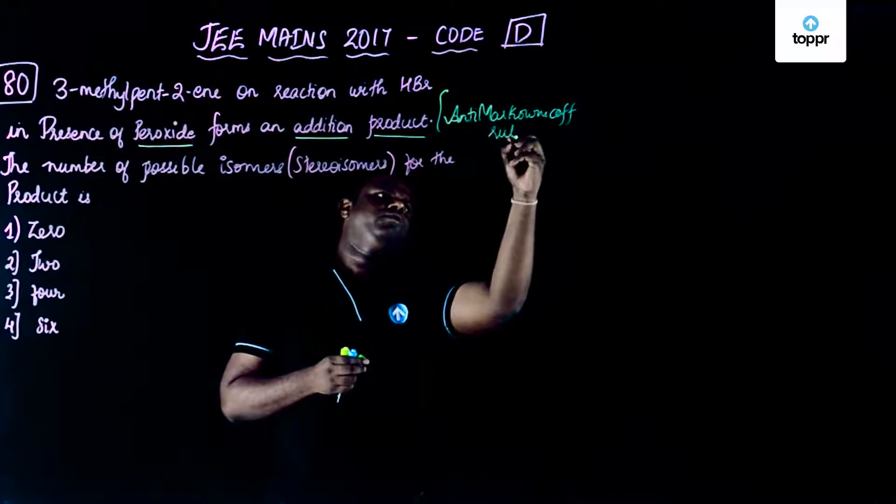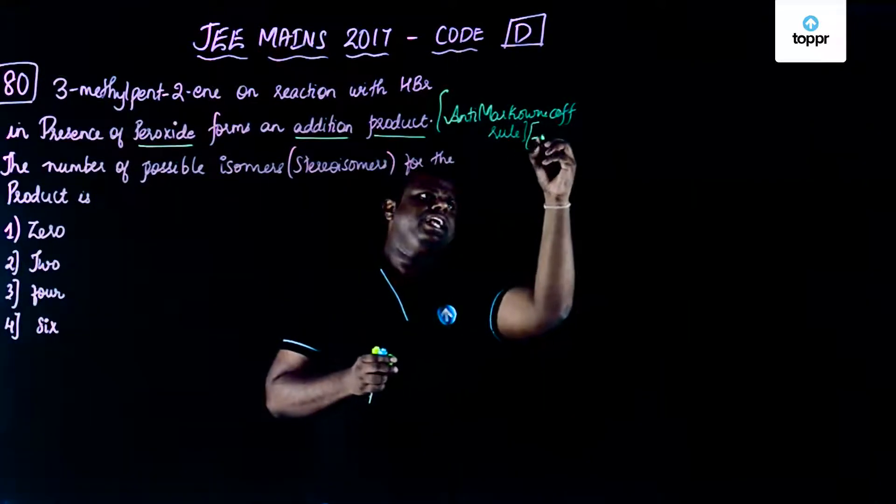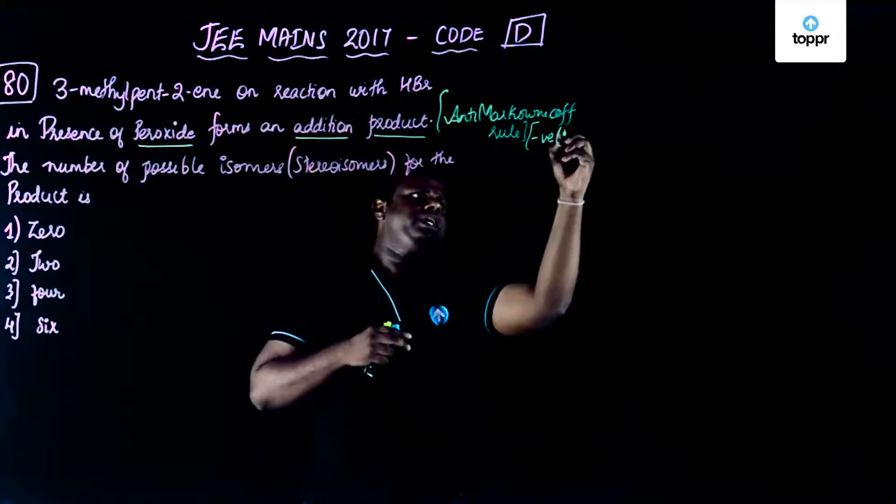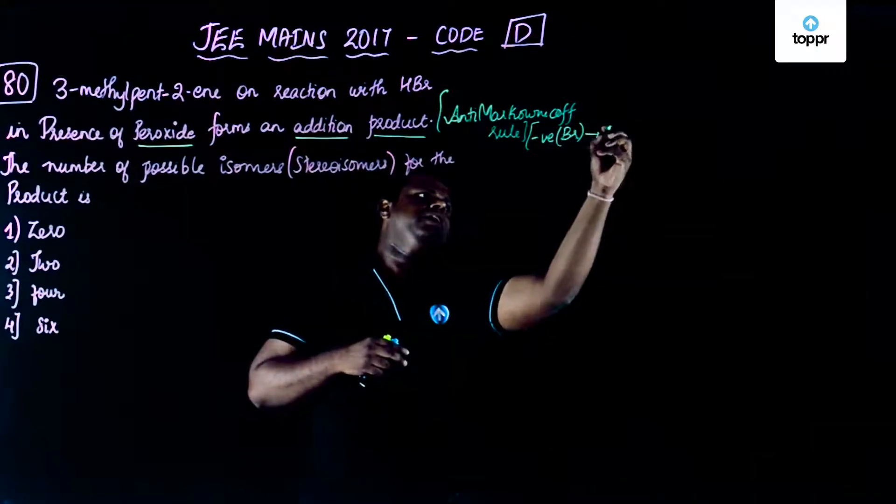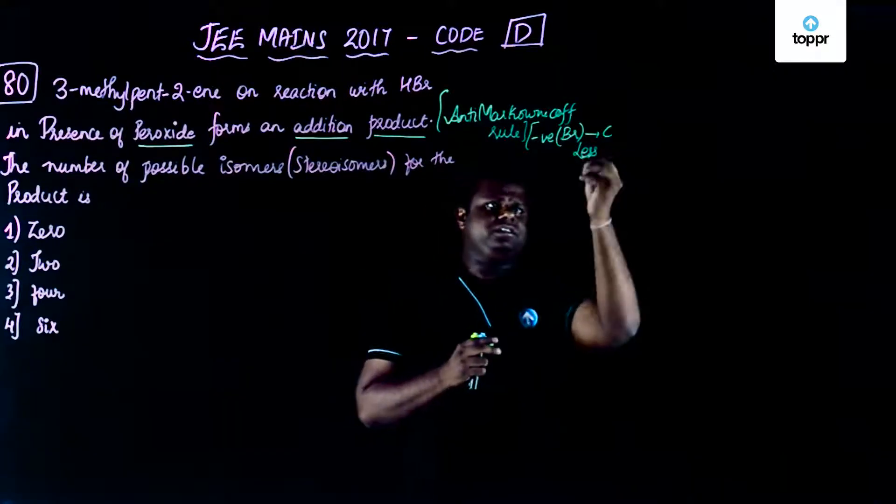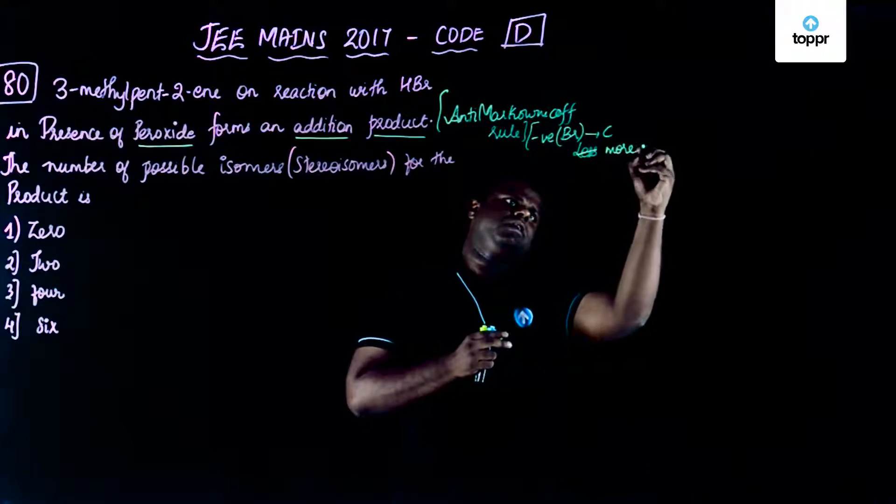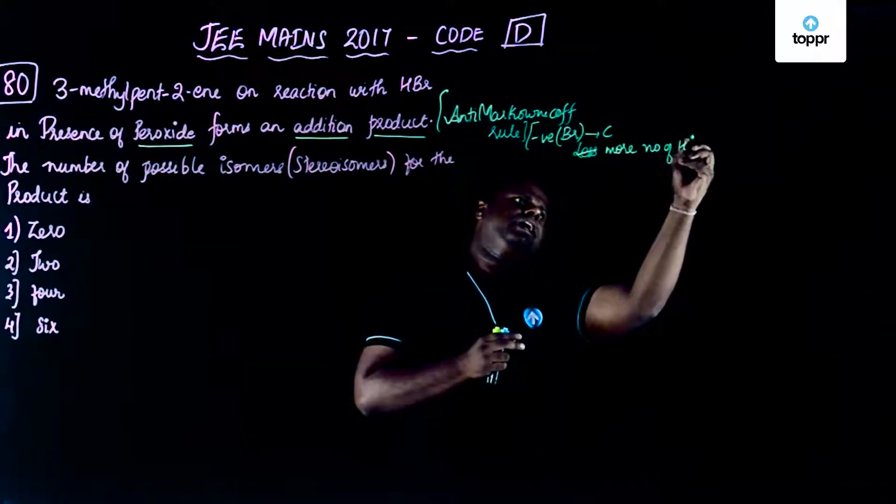Okay, you are expected to follow the anti-Markonikov's addition rule which is basically negative part of the reagent that is HBr would go to that carbon containing less number, not less but Markonikov's means less, right? So it has to be more number of hydrogens.